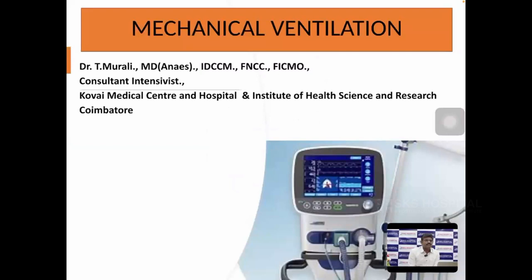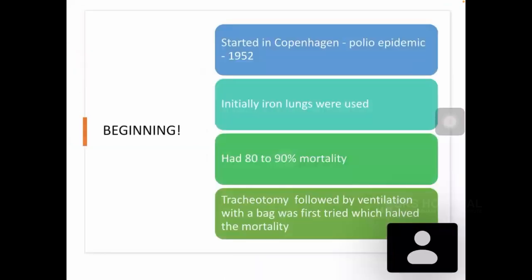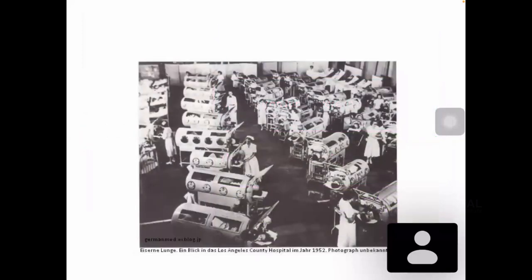I would like to thank Dr. Nishant for giving me this opportunity. When we talk about mechanical ventilation, it is important to know when it started. In 1952, during the polio epidemic in Copenhagen, iron lungs were used — but with 80 to 90% mortality. The iron lung used negative pressure ventilation based on the concept of spontaneous ventilation. Once ventilation evolved and tracheostomy followed by bag mask ventilation was introduced, mortality was reduced by half.